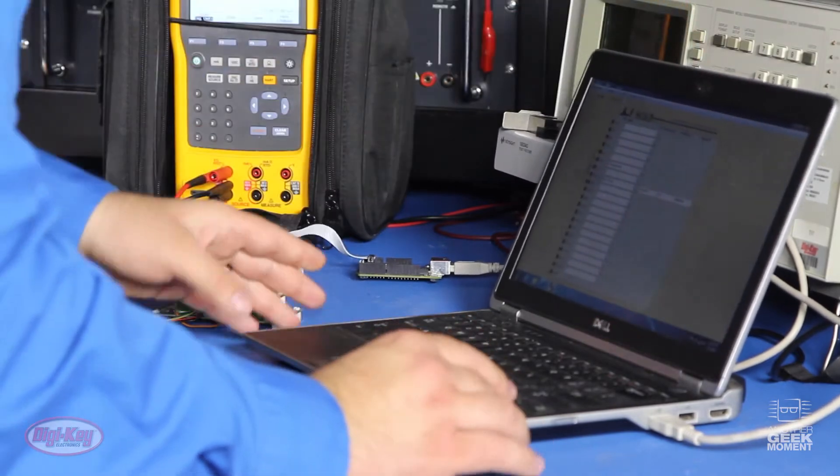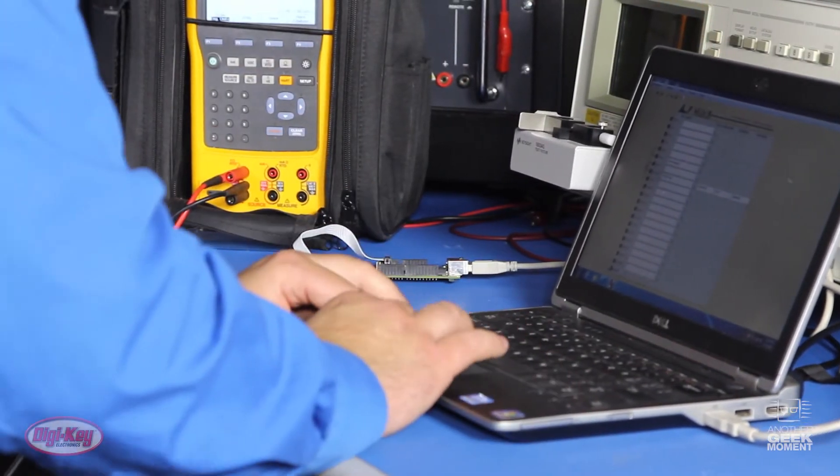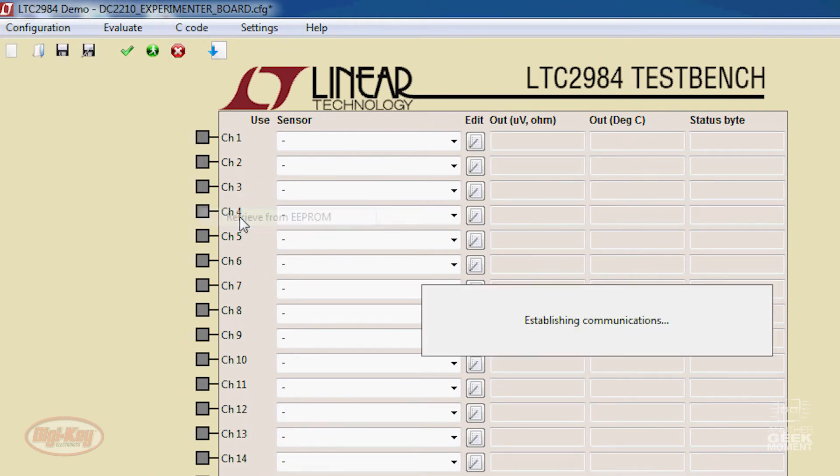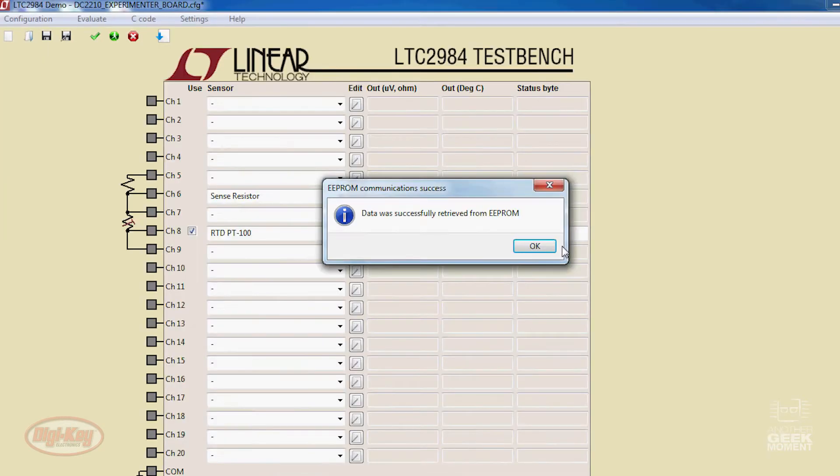Earlier I already loaded a circuit into the EEPROM, and now I'll show you how simple it is to get it back. Let's go to configuration, EEPROM, retrieve from EEPROM. And just like that, you got your circuit.